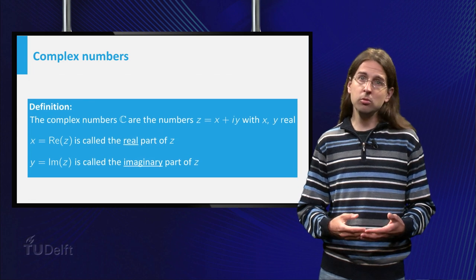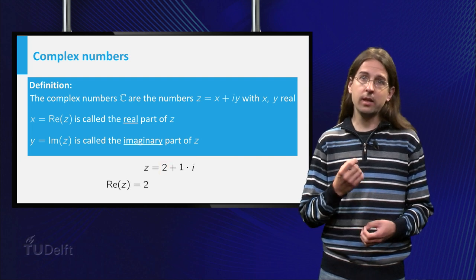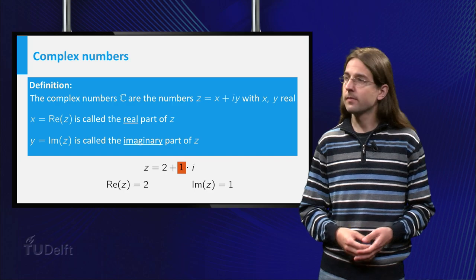For example, 2 + i is a complex number with real part 2 and imaginary part 1. It is important to realize that we study complex numbers to find real solutions to real problems. You do not want to have a final solution to a problem which still contains i, as you do not know what that means.